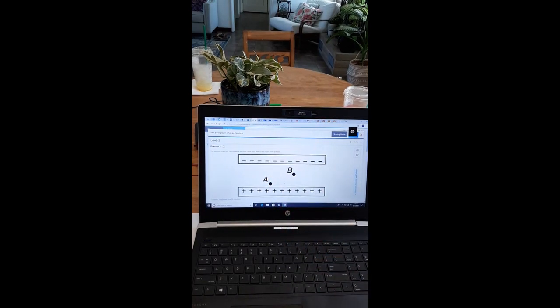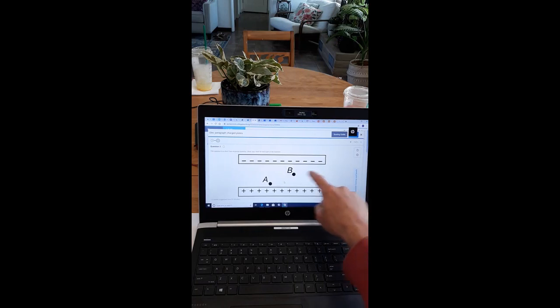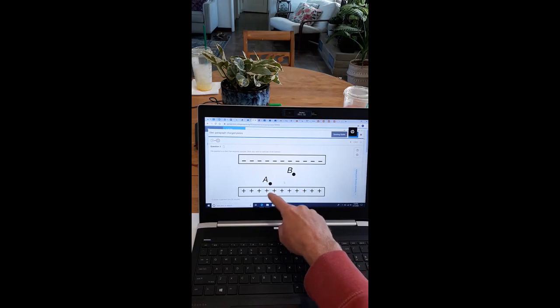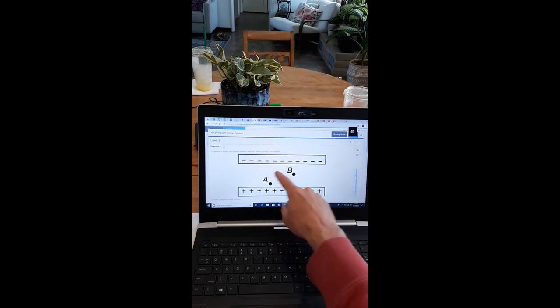Why is that? Because we formed a convention. I say we like I had something to do with it, but there was a convention formed in physics that said if a small positive test charge was placed at a point, what direction would it go? If I place one here, it would go up. If I place it at A, it would go up. It would go up for two reasons. Not only is it repelled from these positives, but it's attracted to these negatives.